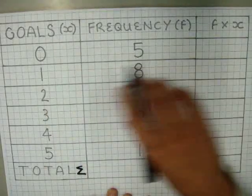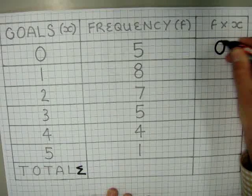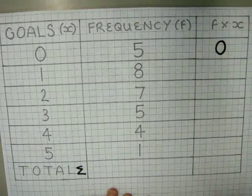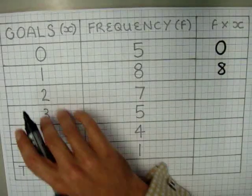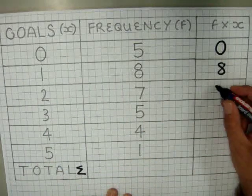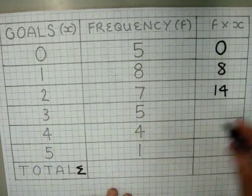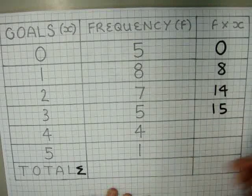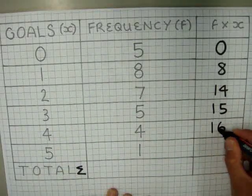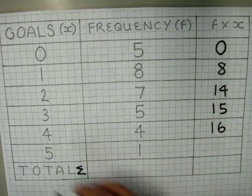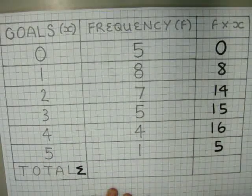So to multiply across: 0 times 5 is 0. 1 times 8 is 8. 2 times 7 gives you 14. 3 times 5 is 15. 4 times 4 — a square number — is 16. And 5 times 1 is 5.